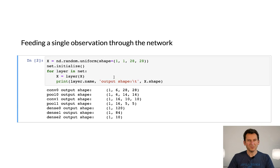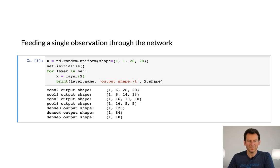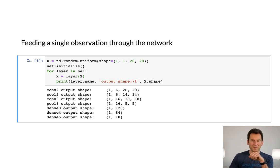We need to see what happens when we feed some data through the network. We feed in a 28 by 28 pixel image. Since we have the appropriate padding, we get six channels with 28 by 28. We then perform pooling, giving us 14 by 14. The next convolution reduces it to 10 by 10 — remember, we have a five by five convolution. Then we halve the resolution again by pooling, and then we have three dense layers. That's exactly as expected.